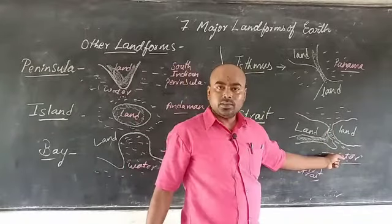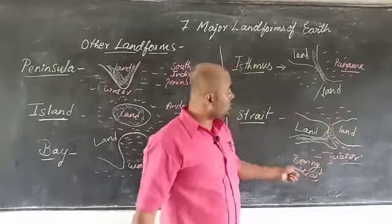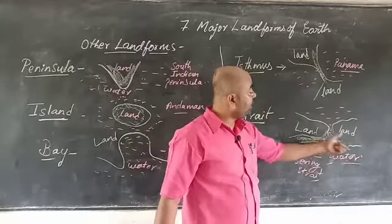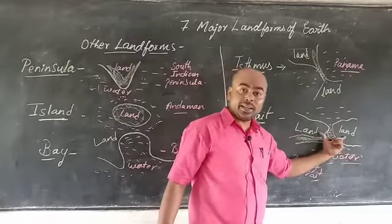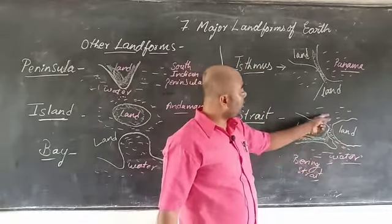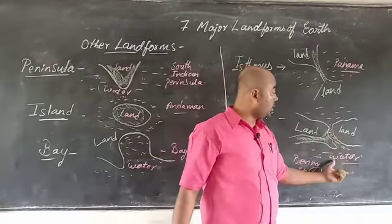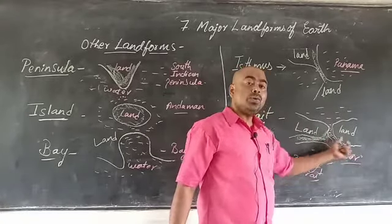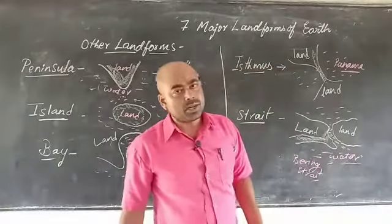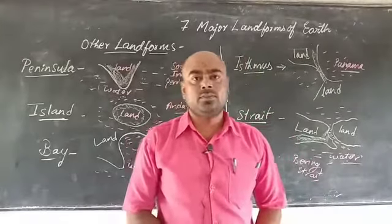The last one is strait. A strait is a narrow stretch of water joining two big water bodies and separating two land masses. So that is the end of the chapter — hope you understood well. Stay safe, thank you.